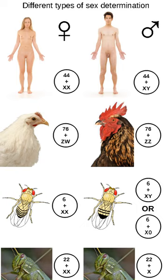The XX-XY sex determination system is the most familiar, as it is found in humans. The XX-XY system is found in most other mammals, as well as some insects. In this system, most females have two of the same kind of sex chromosome (XX), while most males have two distinct sex chromosomes (XY). The X and Y sex chromosomes are different in shape and size from each other, unlike the rest of the chromosomes, and are sometimes called allosomes.